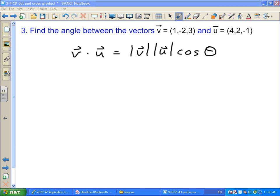V dot U is magnitude of V magnitude of U cosine theta. What we're trying to find in this question is theta. So we want to take this expression and we want to solve it for theta by figuring out all of the other quantities that we have.